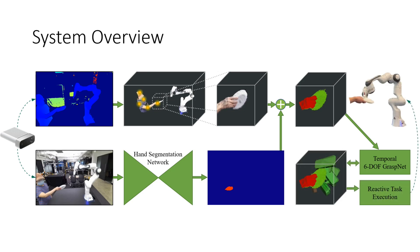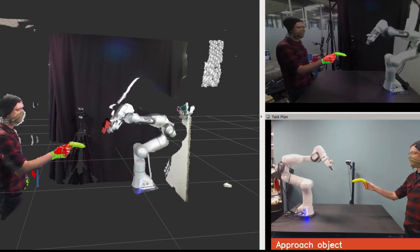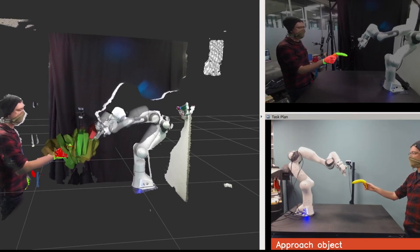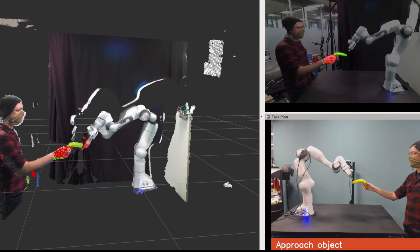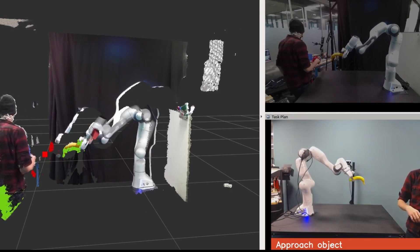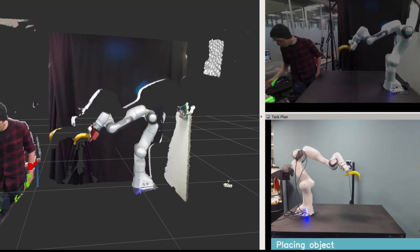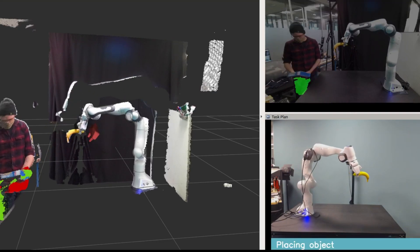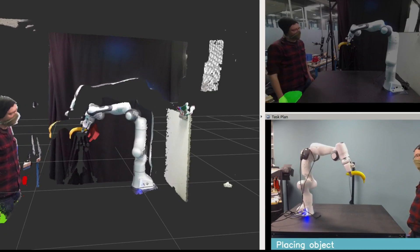These grasps are then sent to reactive task execution. As we execute, we repeatedly choose the best grasp available based on a manually designed heuristic, shown in red here. We repeatedly update this as the robot approaches the grasp until it reaches an acceptable grasp point, at which point it will take the object from the human.